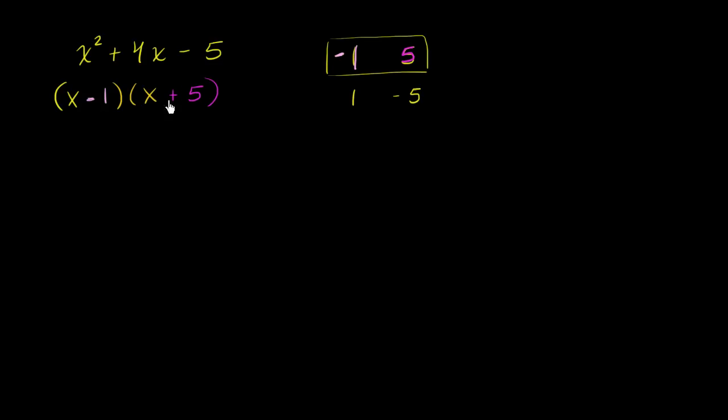You can verify that if you multiply this out, you get x² + 4x - 5. x times x is x², -x plus 5x is 4x, and -1 times 5 is -5. This is all review for us at this point.